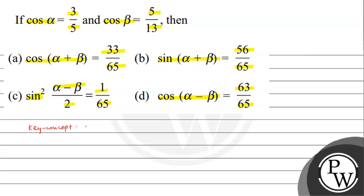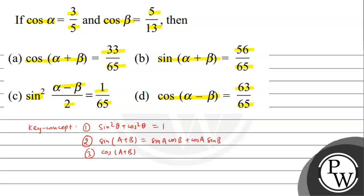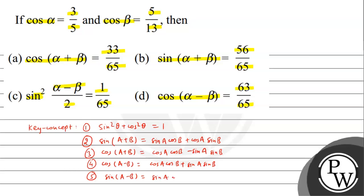Before solving, let's note the key concepts. First key concept: sin²θ + cos²θ = 1 (trigonometric identity). Second: sin(A+B) = sin A cos B + cos A sin B. Third: cos(A+B) = cos A cos B − sin A sin B. Fourth: cos(A−B) = cos A cos B + sin A sin B. Fifth: sin(A−B) = sin A cos B − cos A sin B. Keep these 5 key concepts in mind as we solve.